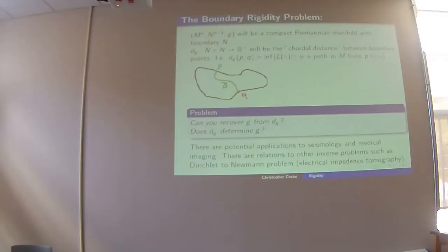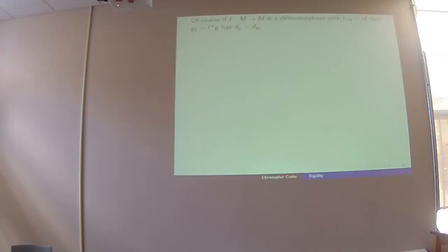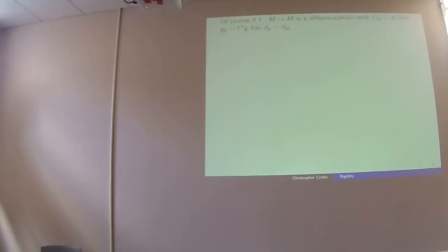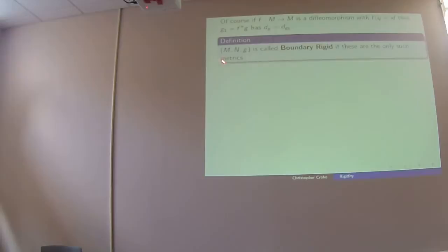In general, the answer is false — I'll give counterexamples in a second. You can ask the question about manifolds as well. Now, ignoring applications and sticking to geometric questions: one way, of course, if you start with a diffeomorphism from your manifold that fixes the boundary and pull your metric back by that diffeomorphism, you get an isometric metric — it's just a reparameterization. And what I want to ask is if that's the only thing that can happen.